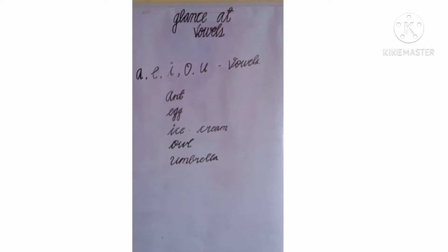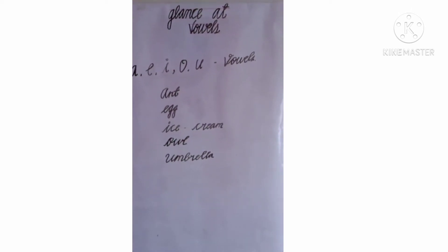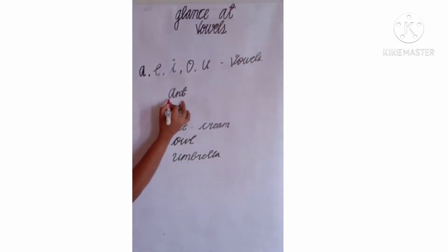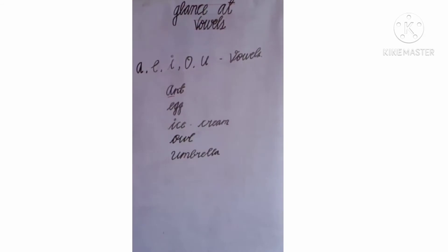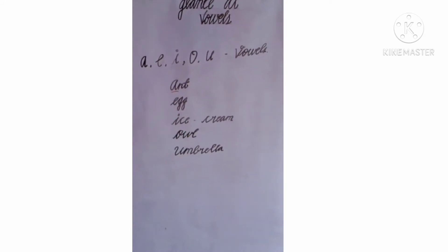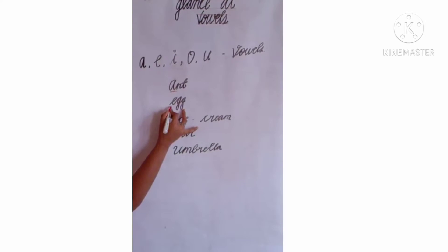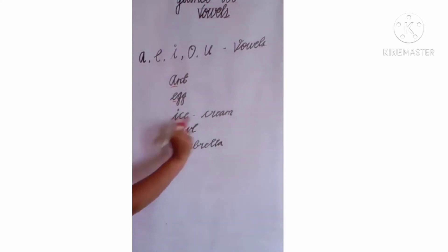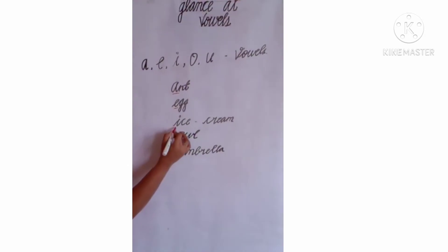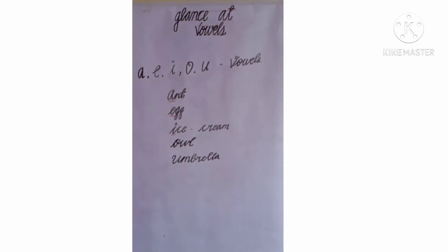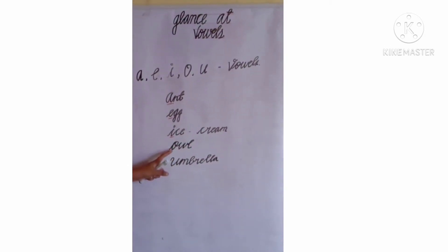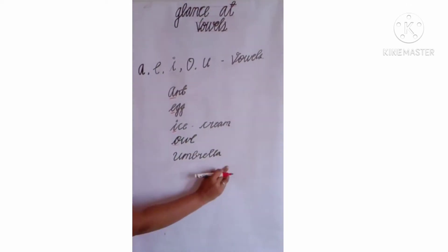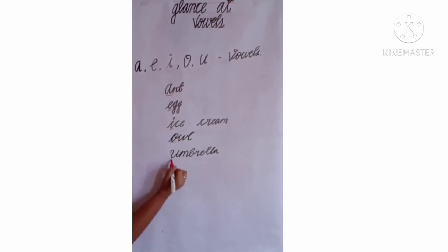Now we will analyze the vowel letters. In Ant which is the vowel? A. In Egg, which is the vowel letter? E. In Ice Cream, which is the vowel letter? I. In Owl, which is the vowel letter? O. In Umbrella which is the vowel letter? U.